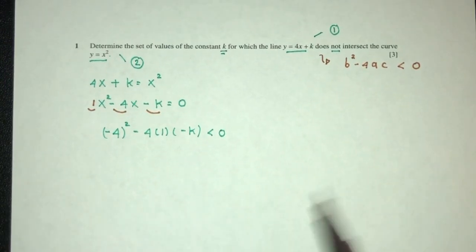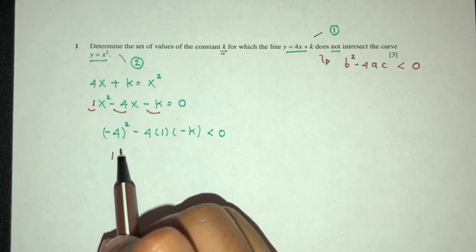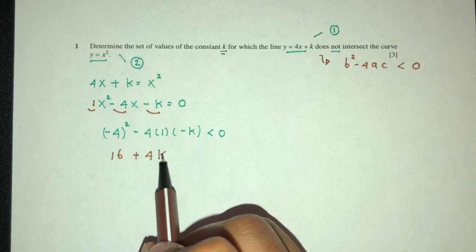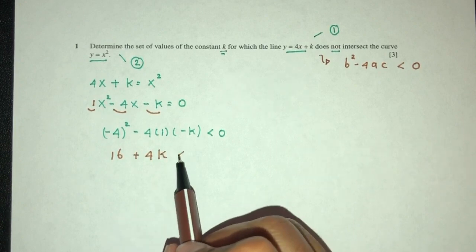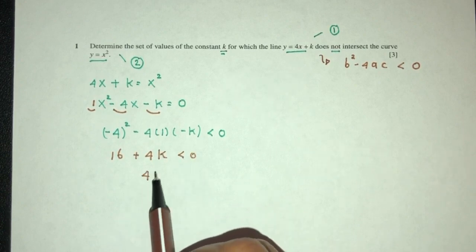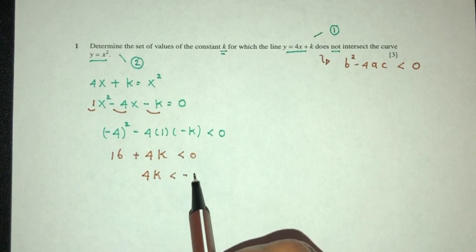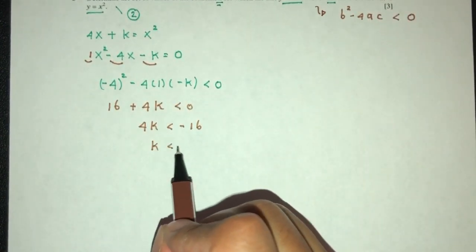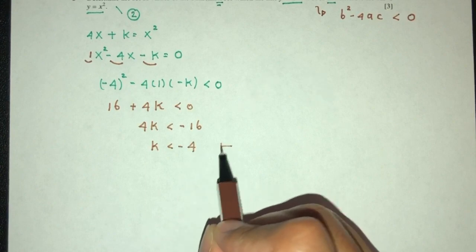Now let's simplify. That will become 16, minus minus become plus 4k. So 4k minus 16, which gives 4k less than -16, so k have to be less than -4 as your answer.